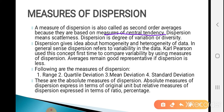What is the definition of dispersion? Dispersion means the scatterness, that is the degree of variation or diversity. Dispersion gives the idea about homogeneity and heterogeneity of data. In general sense, dispersion refers to the variability in the data — it checks the scatterness of data.